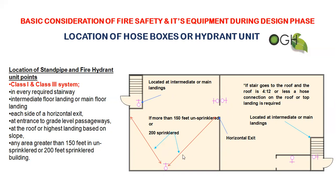These are the basic rules. If you have a horizontal exit, then you have a horizontal exit. If you have a hydrant box, then you can install a hydrant box. You can see the hydrant box at 150 feet. I told you horizontal exit, so it is a basic thing that happens.